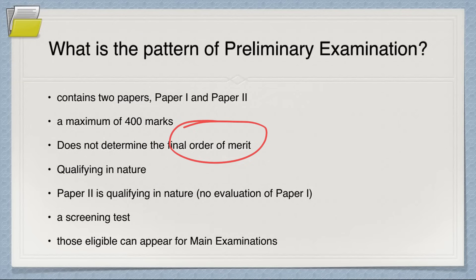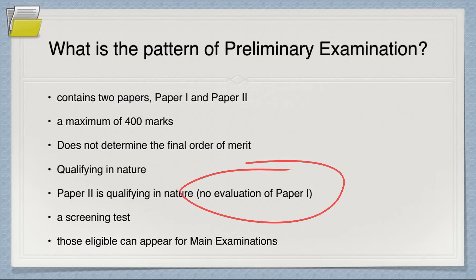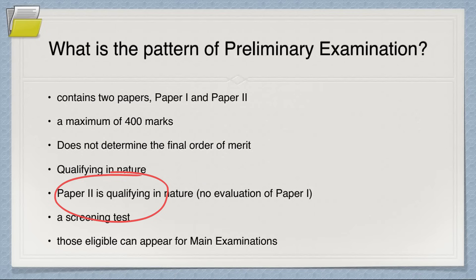If you don't get selected in prelims, you will not be able to sit for the mains examination. So make sure your selection is ensured. You don't need to top the preliminary examination — it is just qualifying in nature. Paper 2 is also qualifying in nature. Many people think they'll get through, but I've seen many people who would have cleared the cutoff in Paper 1 but couldn't qualify Paper 2, so there was no evaluation of Paper 1.